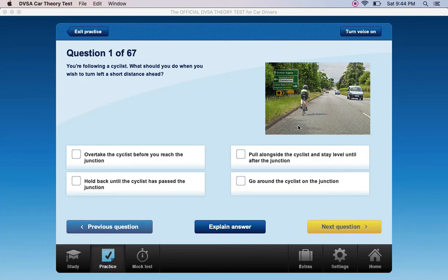Welcome to topic number six, vulnerable road users. You're following a cyclist, what should you do when you wish to turn left a short distance ahead? Overtake the cyclist before you reach the junction, pull alongside the cyclist and stay level until after the junction, hold back until the cyclist has passed the junction, or go around the cyclist on the junction.